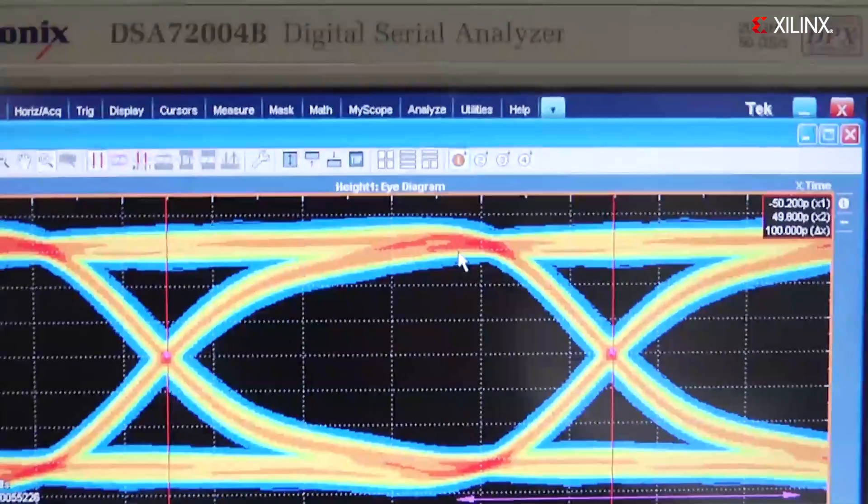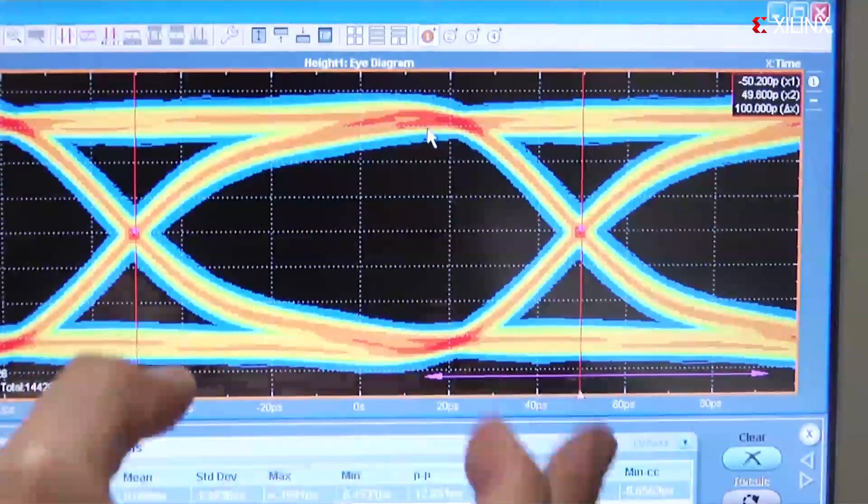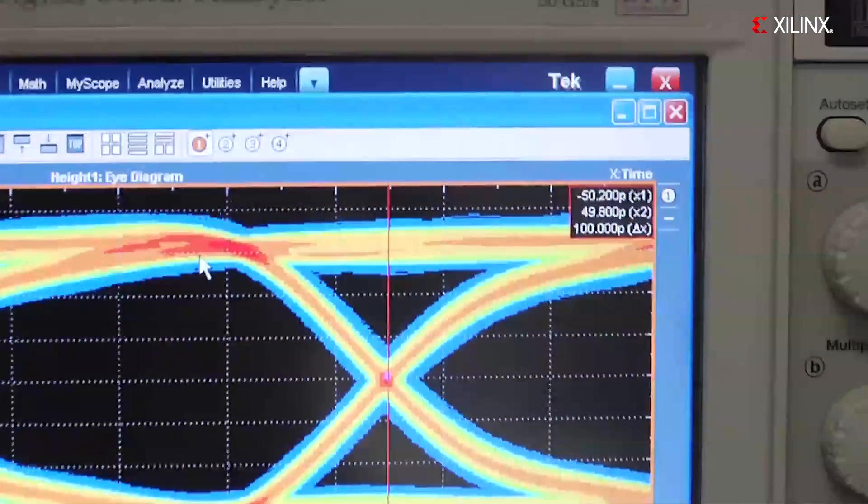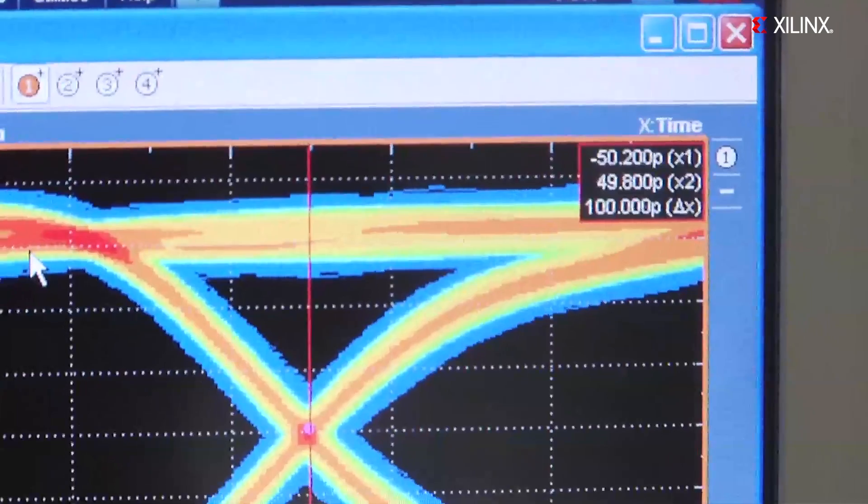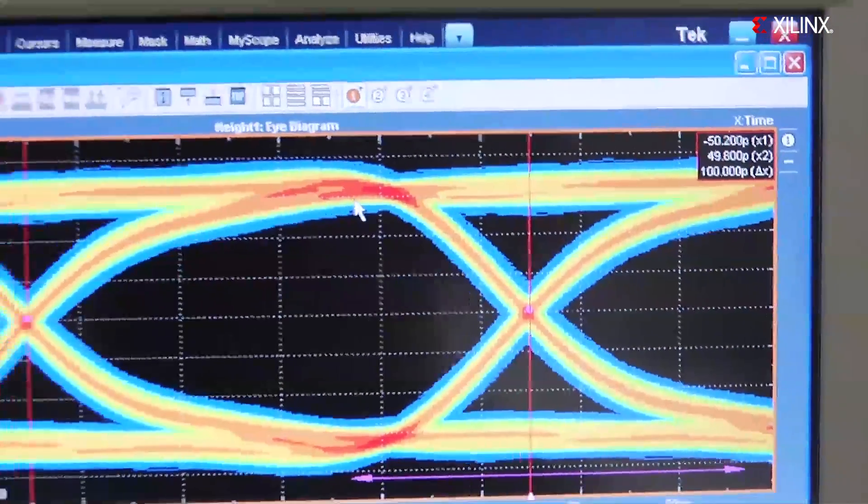I just want to point out a few things. We're measuring the eye width here to show the data rate. That's 100 picoseconds, which is 10 gigabits per second. It's a very clean eye, lots of margin here, and very low RJ, RMS jitter.